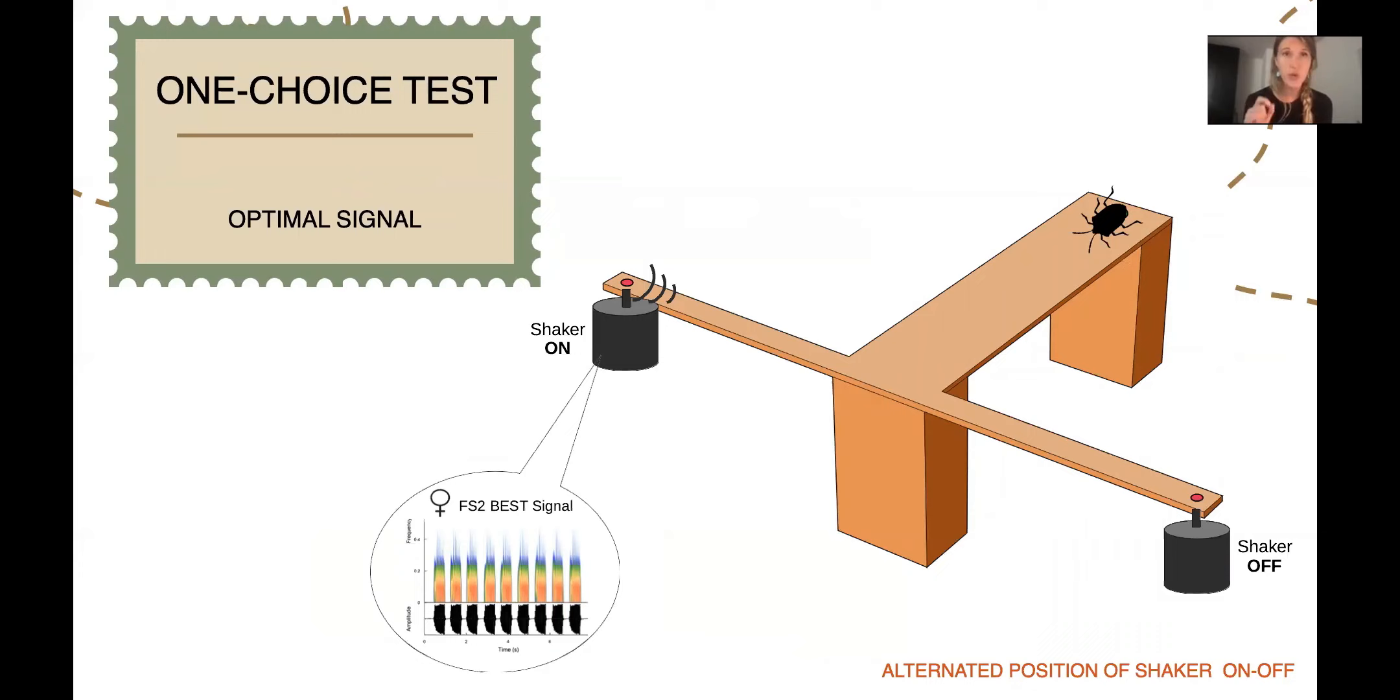Our first test was the one choice test, in which we measured the capability of searching and reaching a specific target when stimulated with FS2 optimal signal. As you can see, the shaker on the left was on emitting the FS2 best, and the shaker on the right was off. We alternated the position of the shaker to each animal, and we expected that males could search and reach the shaker that was on.